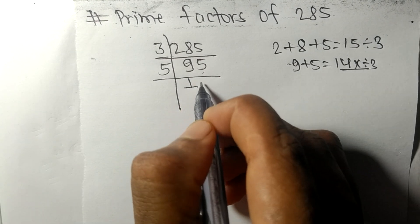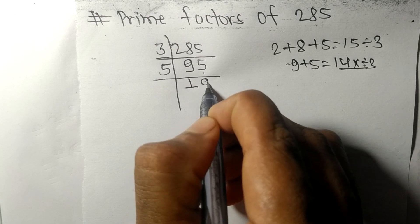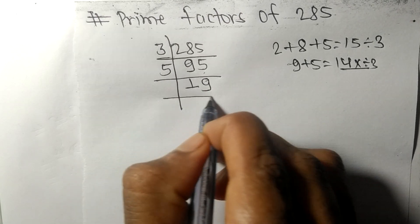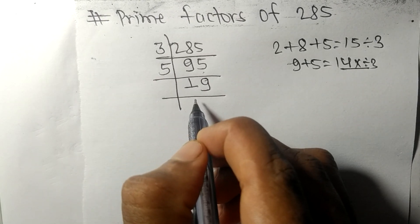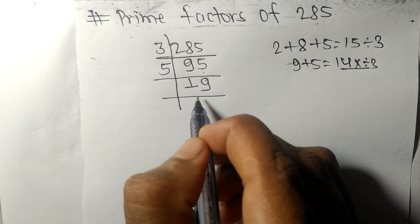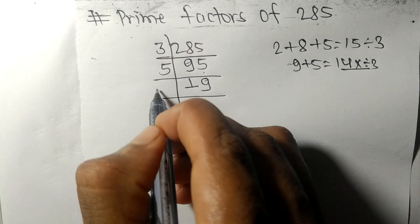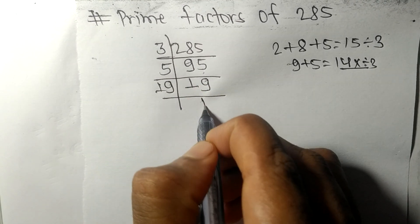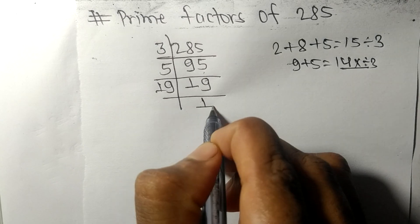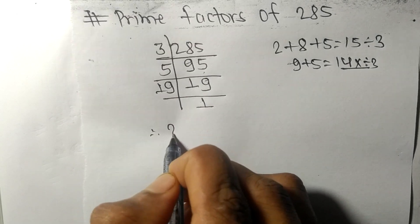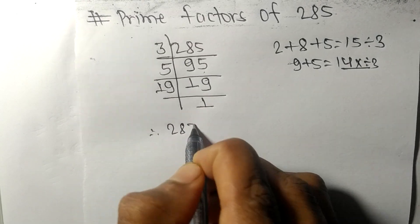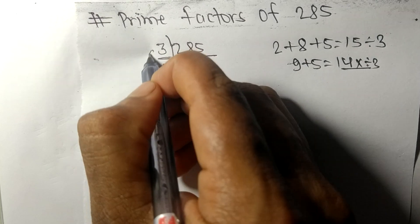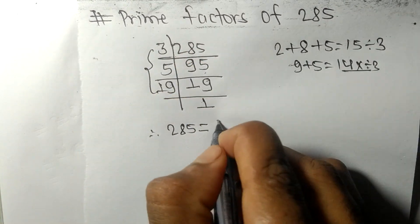After dividing by 5 we get 19, which is a prime number. It is divisible only by 19 itself, giving us 1. Therefore 285 equals 3 times 5 times 19.